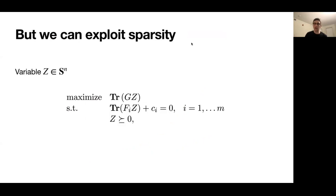And so one structural element that we can often exploit is sparsity. Since usually, or in a lot of situations, the objective function and the linear equality constraints are quite sparse, meaning that only a small percentage of the entries of the matrix variable Z, say 2%, actually affect the objective and the equality constraints.